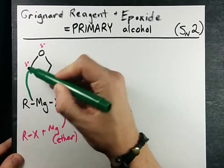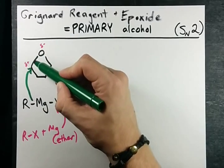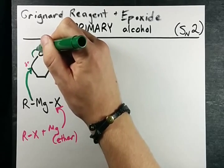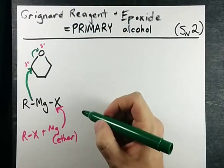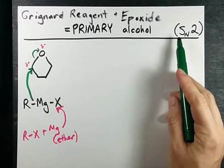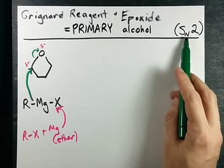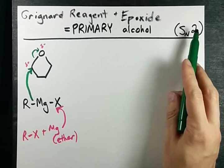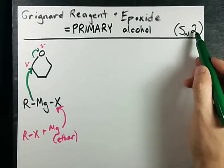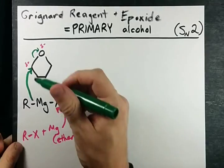The nucleophile attacks that carbon, breaking the C–O single bond here and forcing it to become a lone pair on the oxygen. This should remind you of the backside attack in an SN2 reaction — a nucleophilic substitution between two molecules colliding in the rate-determining step.